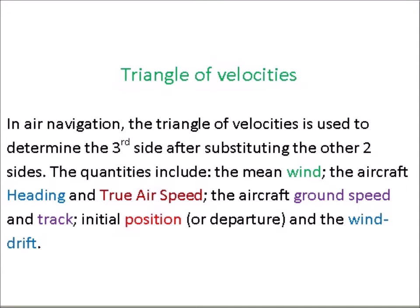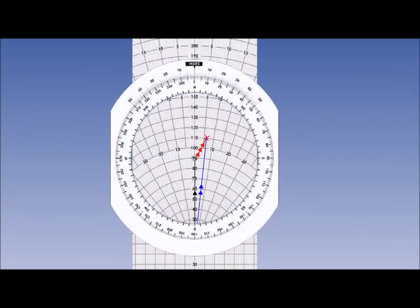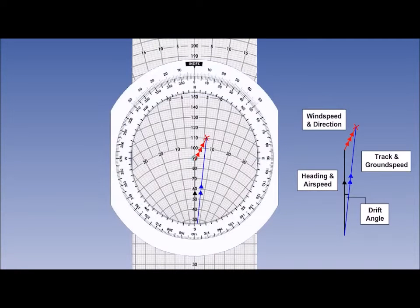In air navigation, the Triangle of Velocities is used to determine the third side after substituting the other two sides. The quantities include the mean wind, the aircraft heading and true airspeed, the aircraft ground speed and track, initial position or departure, and the wind drift. All navigation calculations carried out on the wind face of your navigation computer are based on the Triangle of Velocities.